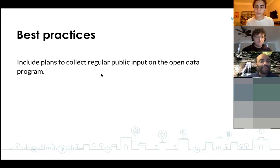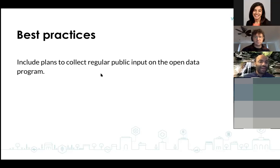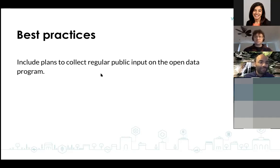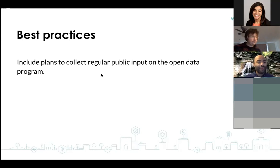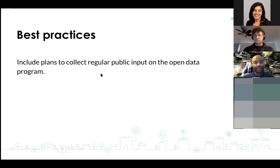Another best practice is to include plans to collect regular public input on the open data program. If you're passing an open data policy for the first time, the program itself may be new and will need to evolve, so it's important to collect public input as it does. Some policies explicitly require a report after six months or a year on how the program has been going. Additionally, ensuring periodic review of policy language and implementation practice through at least annual reporting is key — needs are going to change and new things will be discovered, so having a public-facing account of how things are progressing is important. Annual reporting doesn't have to be a 500-page mega-report, just something to show progress.